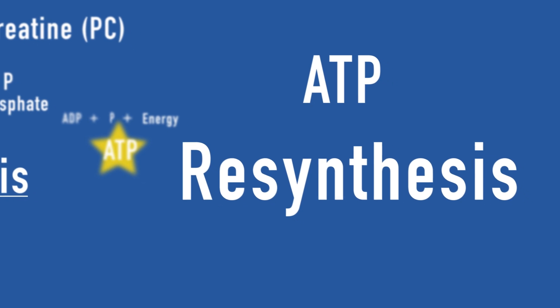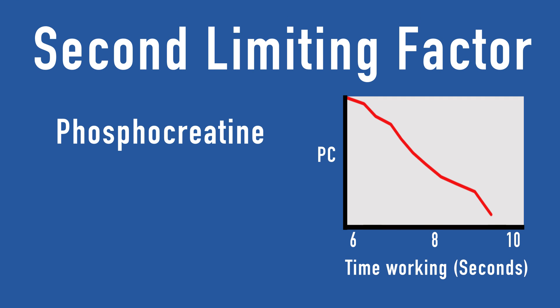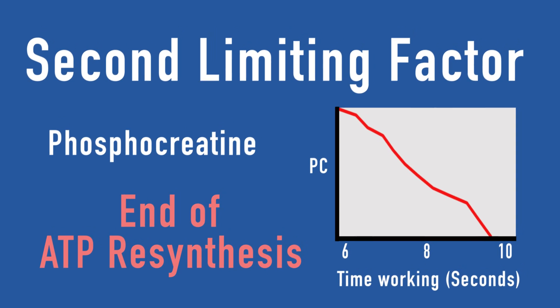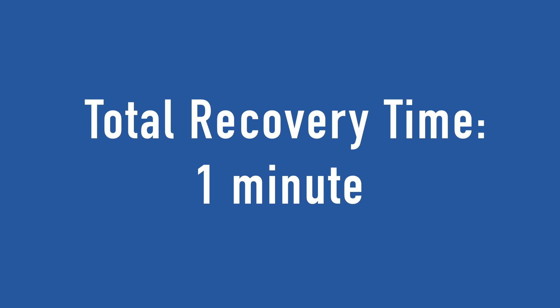Because this process happens so quickly, the energy can be used at a much higher rate. But the phosphocreatine creates a second limiting factor, because once this compound runs out, the body can no longer synthesize ATP. So the system becomes dormant when the body runs out of both adenosine diphosphate and phosphocreatine. It takes around one minute for the whole system to recover, so that the amount of ATP and phosphocreatine can rise to normal levels again.